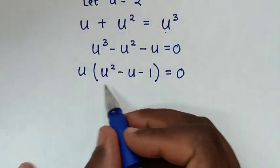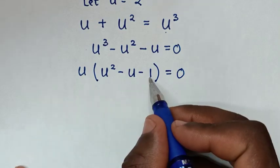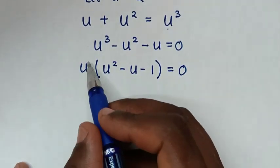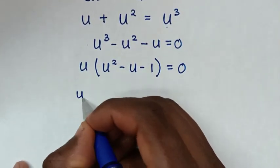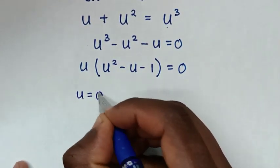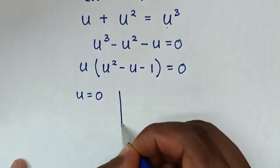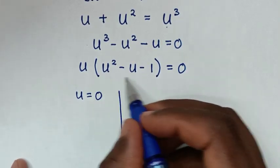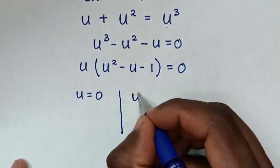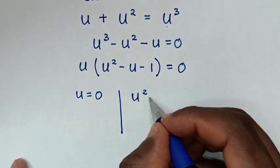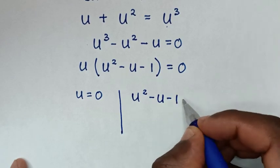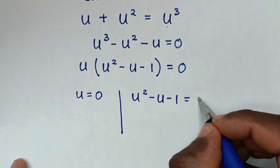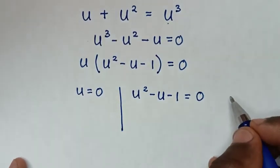From here we have two solutions. The first solution is u equals 0, and the second solution comes from the quadratic u squared minus u minus 1 equals 0.